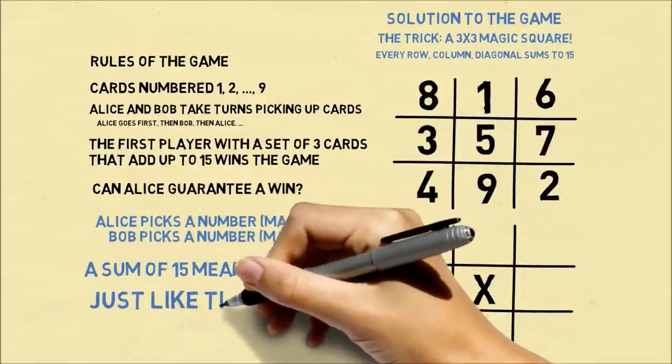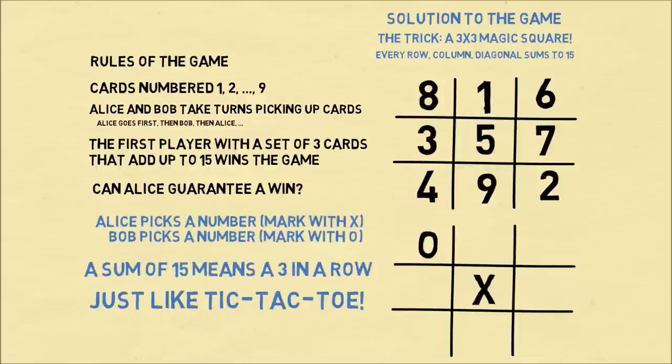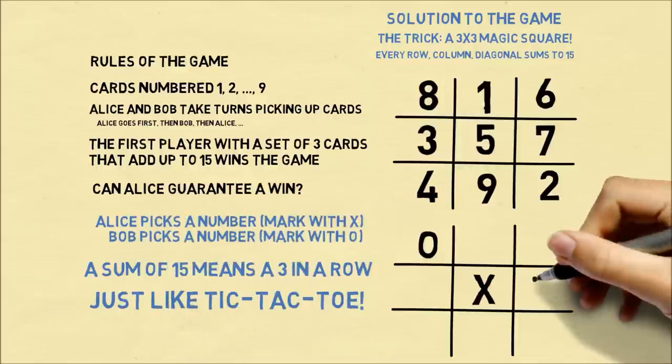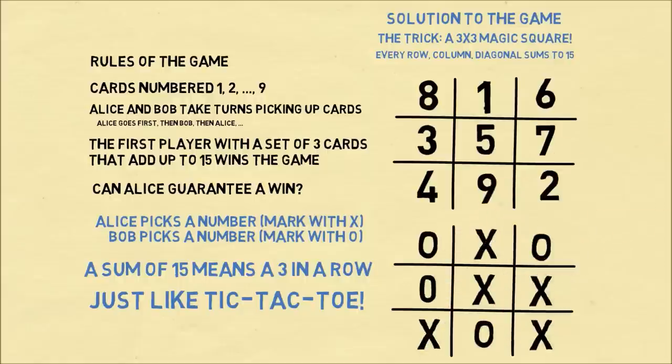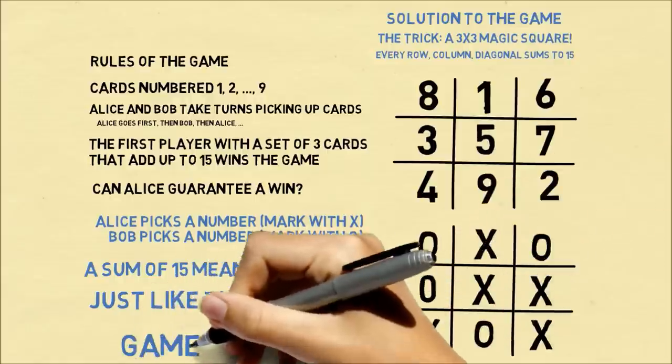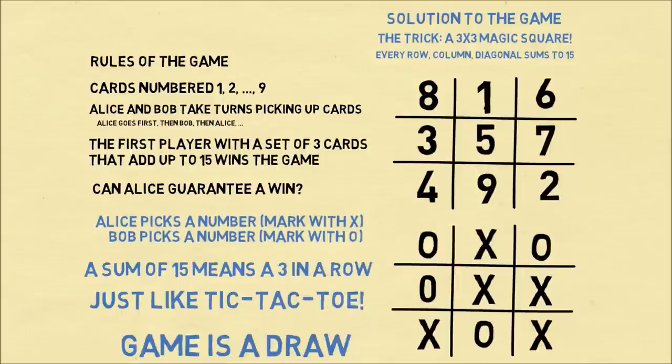And that's the insight. This game is exactly like Tic-Tac-Toe. So wherever Alice goes and Bob goes, we're alternately picking X's and O's, both players trying to get 3 in a row. Since Tic-Tac-Toe ends in a draw, this game also ends in a draw.